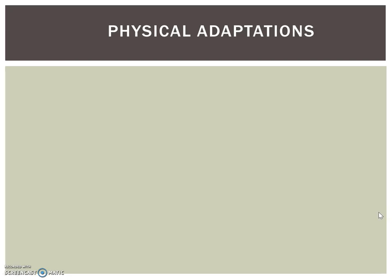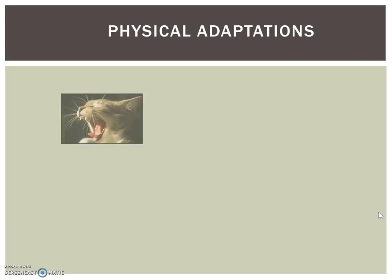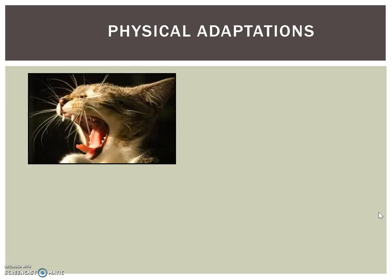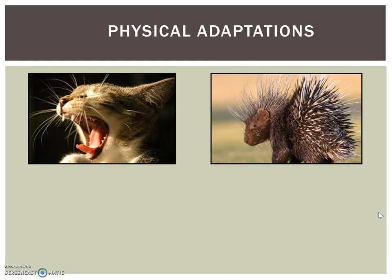Adaptations that affect the way an organism looks are called physical adaptations. Physical characteristics include the structure of physical features, such as the long pointy front teeth of a cat and the needle-like fur of a porcupine. Almost any structure that an organism has can be attributed to an adaptation to its environment.